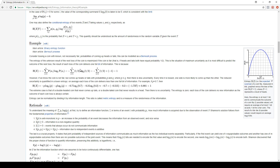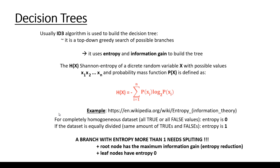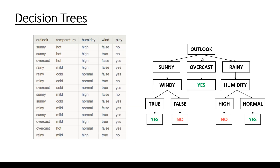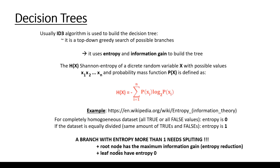To understand decision trees, you don't have to know everything about Shannon entropy, but it's good to understand what's happening in the background. For a completely homogeneous dataset, the entropy is 0, and if the dataset is equally divided — the same amount of true and false values — the entropy is 1. The value of entropy is within the range 0 to 1. A branch with entropy more than 0 needs splitting. The root node has the maximum information gain — maximum entropy reduction — and leaf nodes have entropy 0.